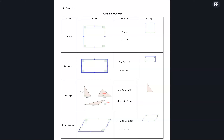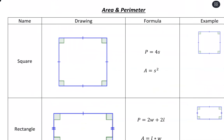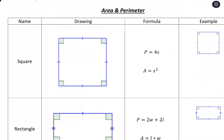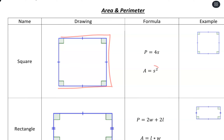In this video, we're going to focus on area and perimeter of various polygons. For each shape, we're going to look at two formulas: perimeter, which is the distance along the outside of the shape, and area, which we can talk about in terms of square units — the space taken up by the inside of the shape.